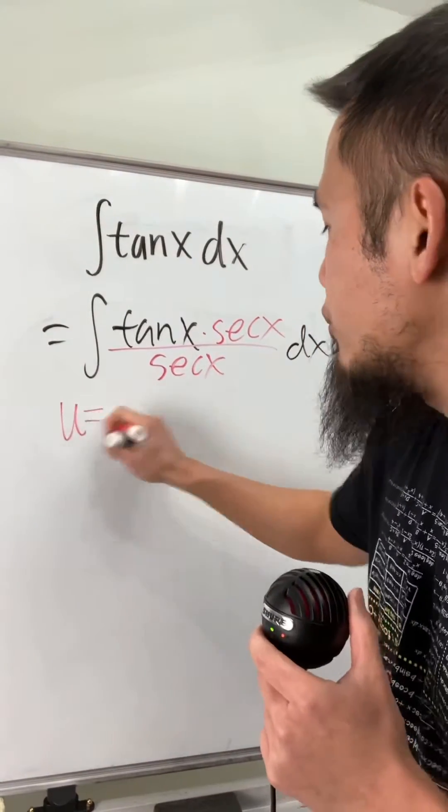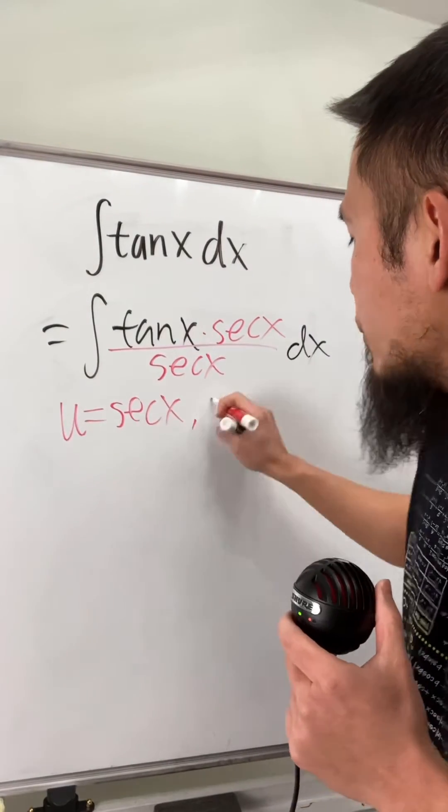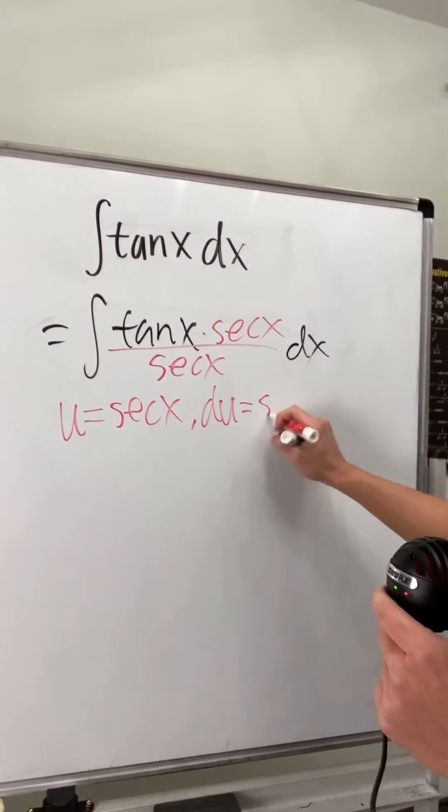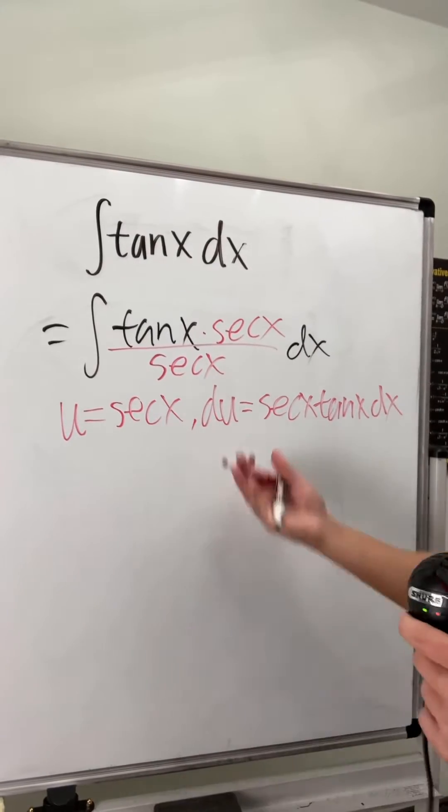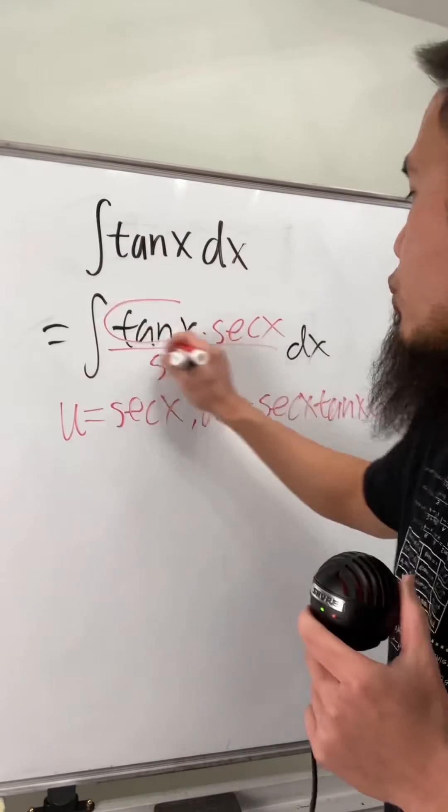So you see this right here now, we can actually let u equal to secant x because this way we get du is just going to be the derivative of secant x, which is just secant x times tangent x. Don't forget the dx right here and have a look right here. This is precisely right here, isn't it?